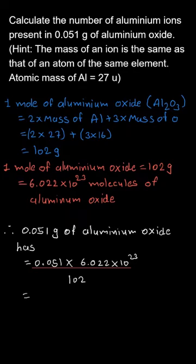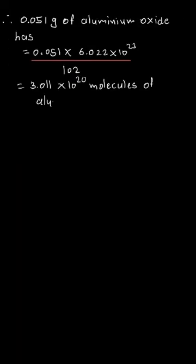Solving this gives us 3.011 × 10²⁰ molecules of aluminium oxide.